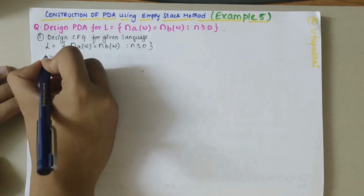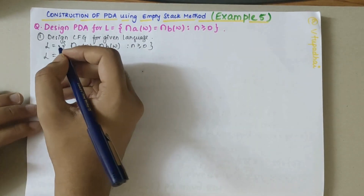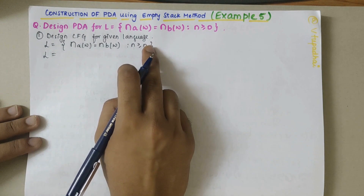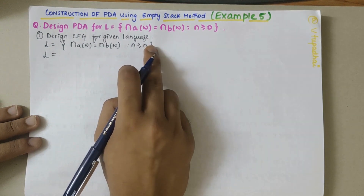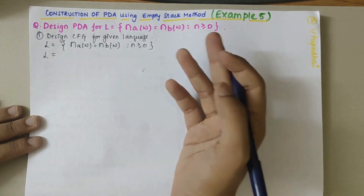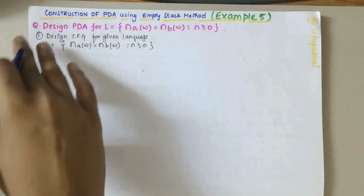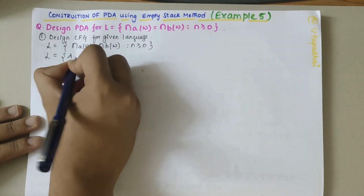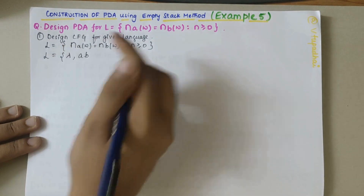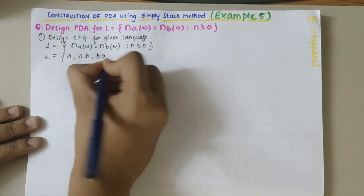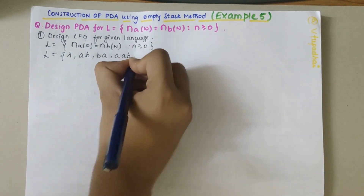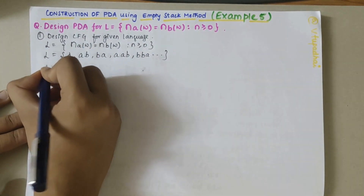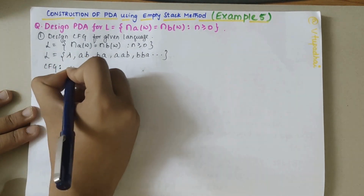The total number of A's and B's should be equal on both sides, and the sequence is not important. When N is zero we get the empty string. Otherwise it could be A followed by any number of A's and B followed by any number of B's, or B followed by any number of B's and A followed by any number of A's. So examples include: λ, AB, BA, AAB, BBA, and so on.